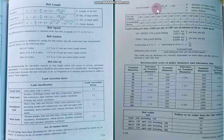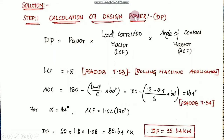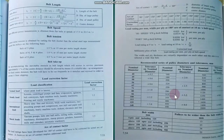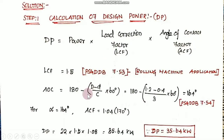Arc of contact equals 180 degrees minus (D minus d) divided by C multiplied by 60 degrees, where D is the larger pulley diameter, d is the smaller, and C is the center distance. Substituting values, the arc of contact is 164 degrees. From the data book table, the angle of contact factor is 1.04. Substituting into the formula, the design power is 35.64 kW.